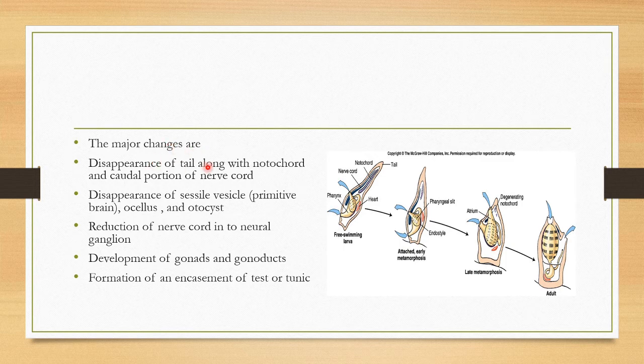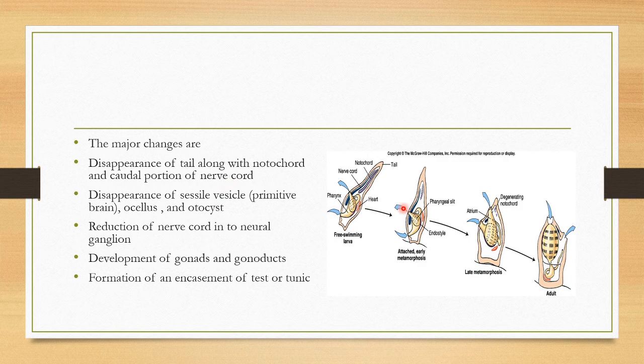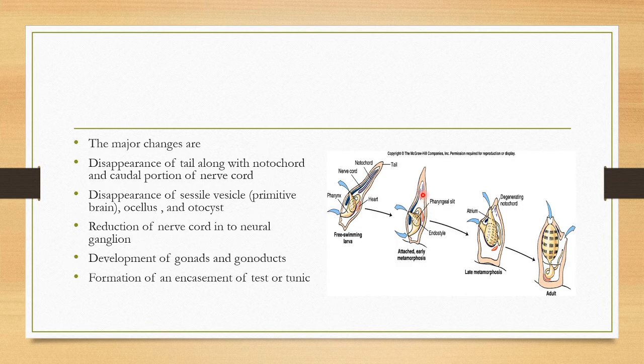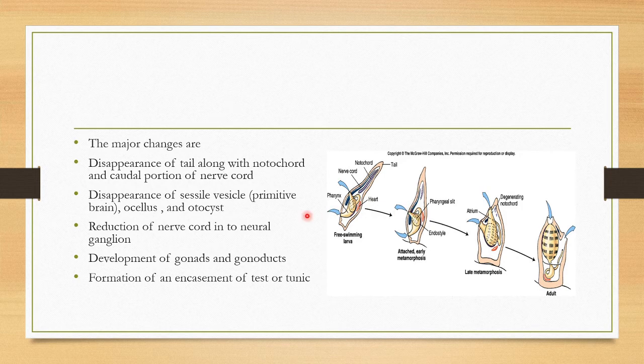So what are the major changes? Disappearance of tail along with notochord and caudal portion of nerve cord. You can see in the picture, this is the size of the notochord. But as it comes to the second stage, the notochord gradually reduces. The nervous system also starts to degenerate. And the disappearance of sense organs like sessile vesicle, ocellus, and otocyst.